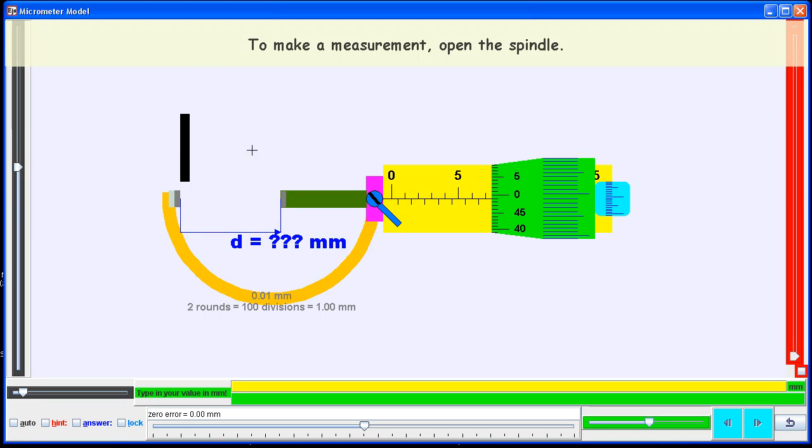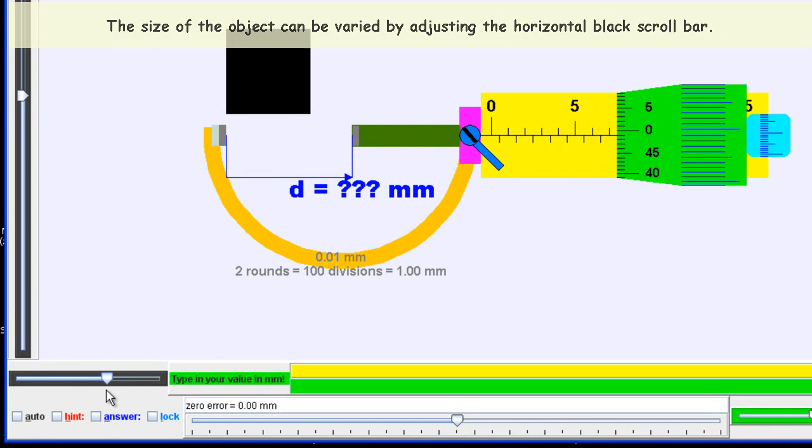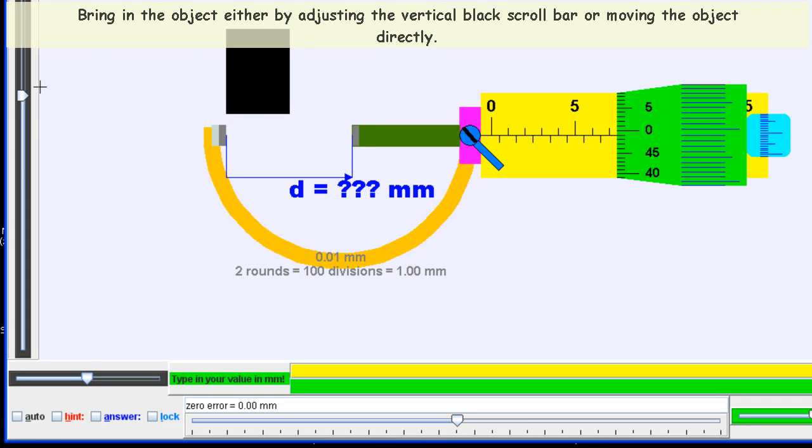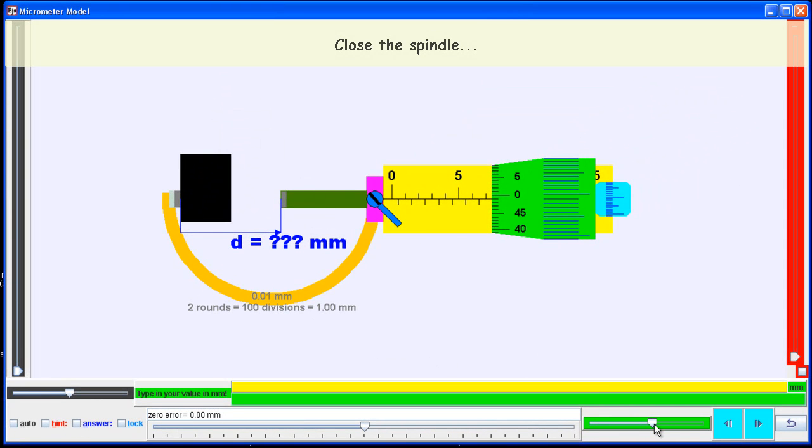To make a measurement and open the spindle, you can use the blue slider bar. To change the size of the object, you can use the two black sliders, or you can alternatively click on it and drag it down.